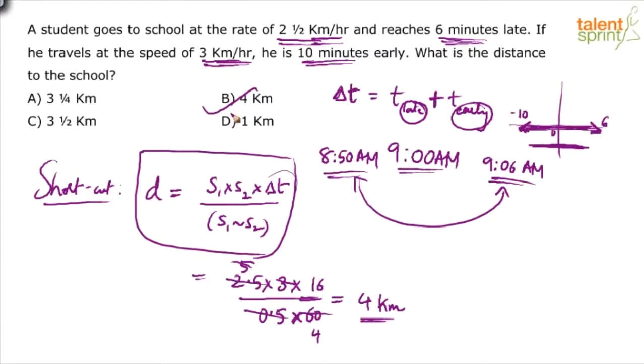There are other ways of doing it. If you do not know the shortcut formula, what you can do: the difference between the two times equals time in one case minus time in the other case equals 16 minutes. What is time? Distance by speed. So distance/2.5 minus distance/3 equals 16/60. Same calculation - from this method we have derived the shortcut formula. When you take d common and do all that calculation, you get the same answer: s1 × s2 × Δt / (s1 - s2).